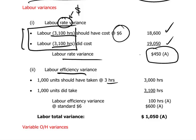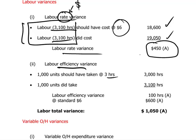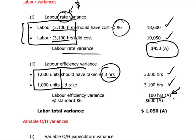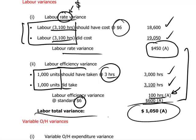For labor efficiency: actual output of 1,000 units should have taken 3 hours each, so 3,000 hours total, but actually took 3,100 hours. The labor efficiency variance is 100 hours adverse, which at $6 per hour equals $600 adverse. Adding the two sub-variances — $450 adverse (rate) plus $600 adverse (efficiency) — gives a total labor variance of $1,050 adverse.